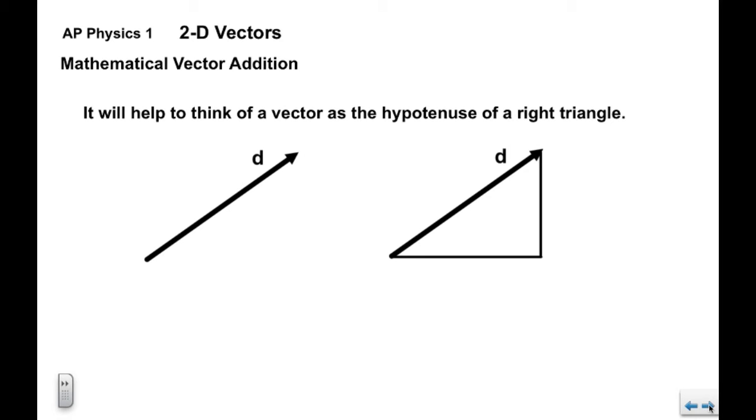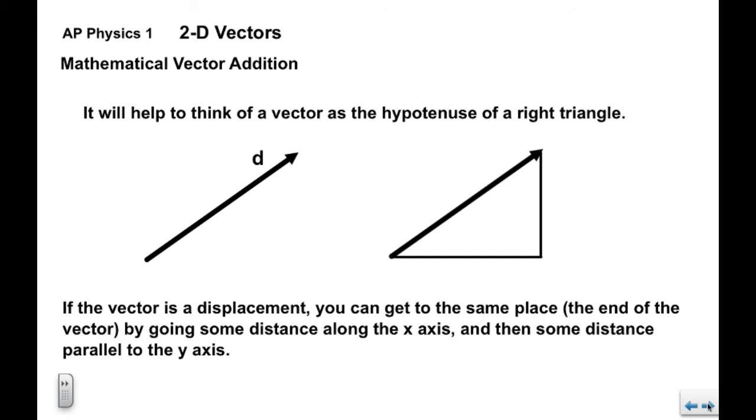When we think about components, it's going to help to think of a vector as the hypotenuse of a right triangle. So here we have a vector d. If we visualize that vector d as the hypotenuse of a right triangle, you can get to the same place. If this is a displacement vector some distance at some mathematical angle, we could get to the same place by going some distance along the x axis and then some other distance parallel to the y axis.